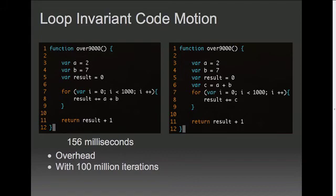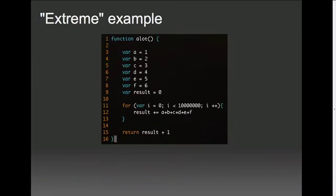So I bumped it up to 100 million iterations, and then I saw a difference. Without LICM, the code ran in 156 milliseconds, and with LICM, it ran in 127 milliseconds, which is 18% faster. It's a pretty big speed increase.